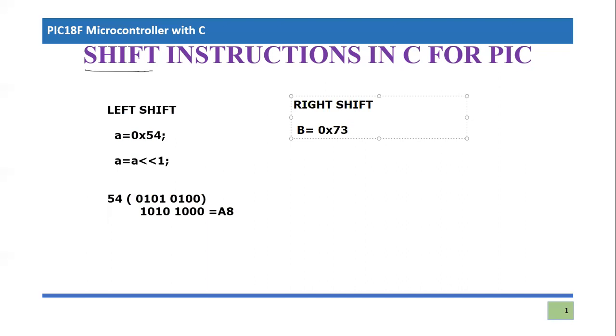Let's consider B = 0x73. This is a C statement. If I'm going to use the right shift operator, I will write B = B with the greater than sign two times. This is called the right shift operator in C language. Let's say I want to shift two bits.